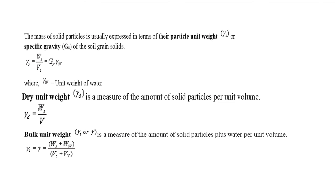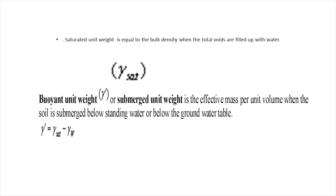Bulk unit weight, gamma or gamma t, is a measure of the amount of solid particles plus water per unit volume: gamma equals weight of solids plus weight of water divided by volume of solids plus volume of voids. Saturated unit weight equals bulk density when total voids are filled with water. Buoyant unit weight is the submerged unit weight when soil is below the ground water table: gamma dash equals gamma saturated minus gamma w.